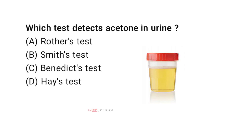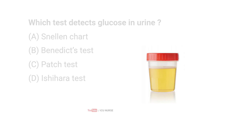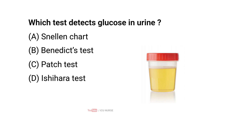Which test detects acetone in urine? Correct answer A: Rothera's test. Which test detects bile salts in urine? Correct answer B: Hay's test. Which test detects glucose in urine? Correct answer B: Benedict's test.